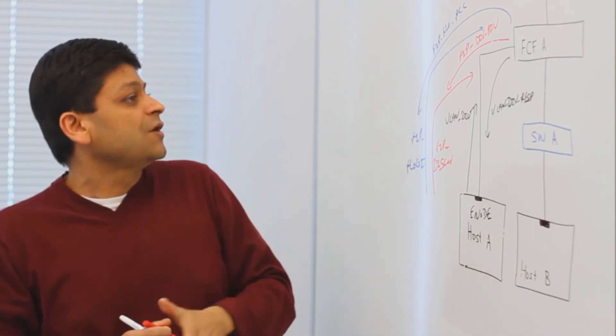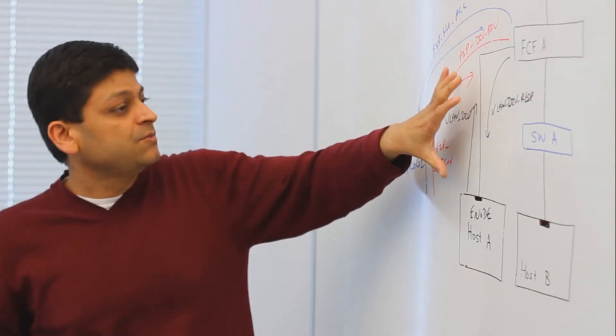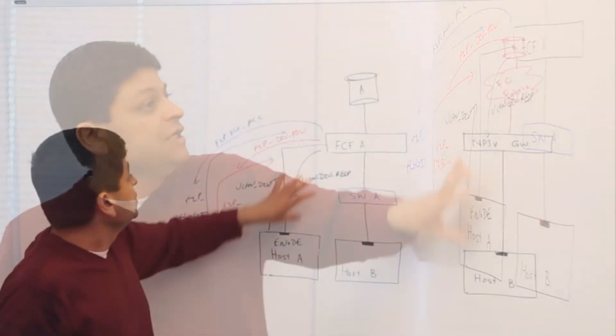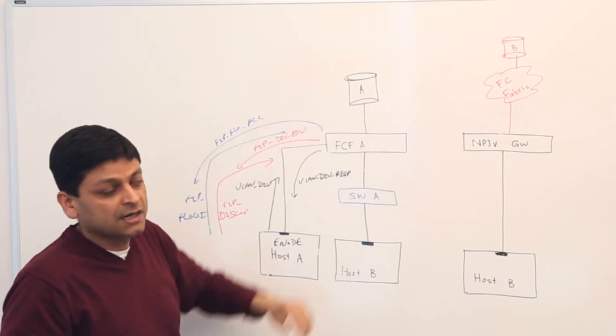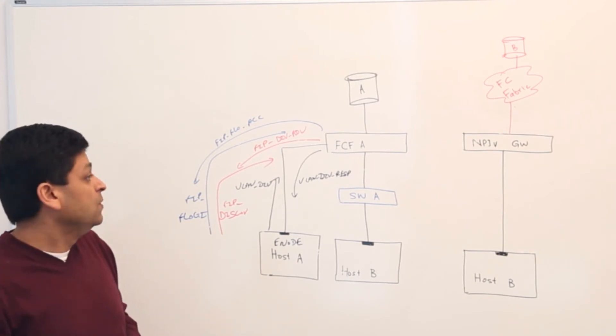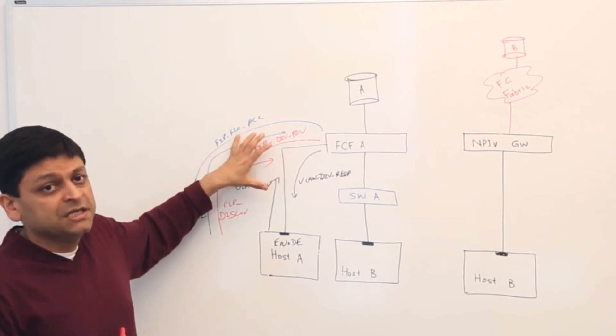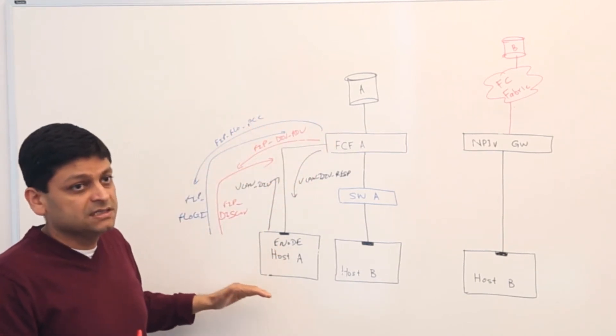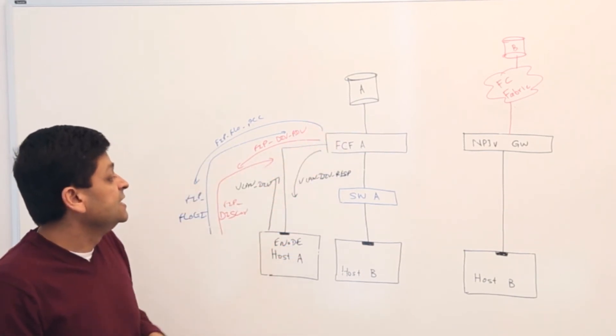So this is what we would call FIP processing or the initialization protocol. After that, all the frames which are sent from enode to this device or to the target are FCoE frames or FCoE encapsulated frames. So in some ways there is like a two-phase here where we have a FIP initialization to discover each other, and the second phase is the actual data phase where once this enode has logged in, it will start sending data.